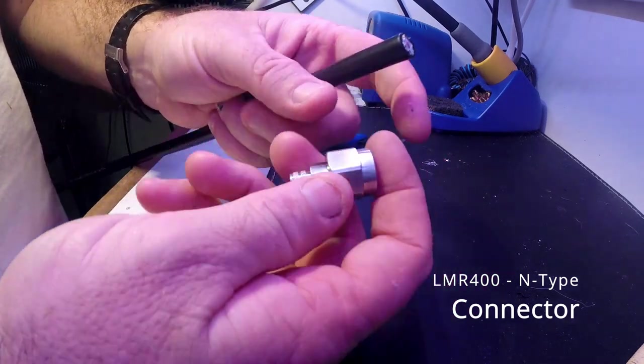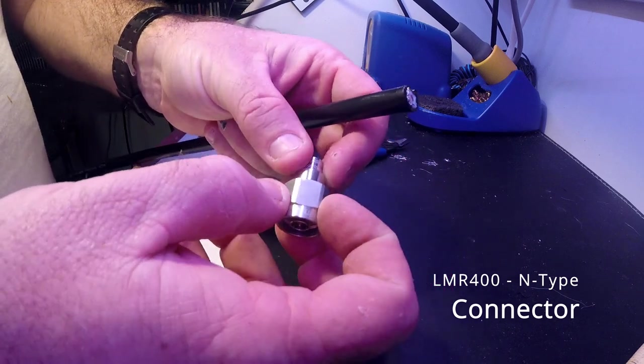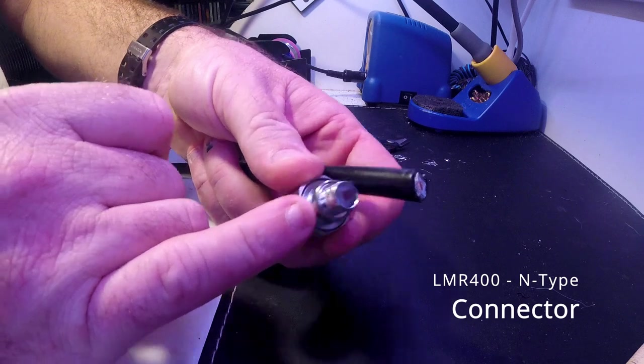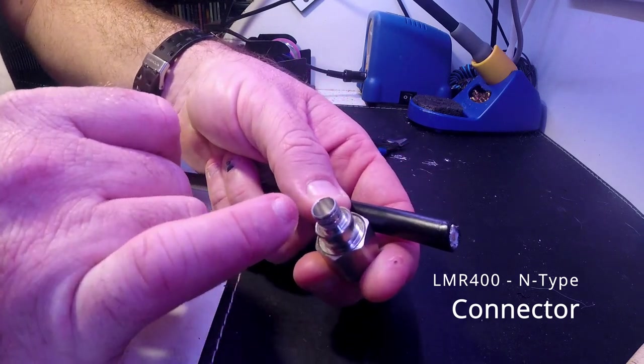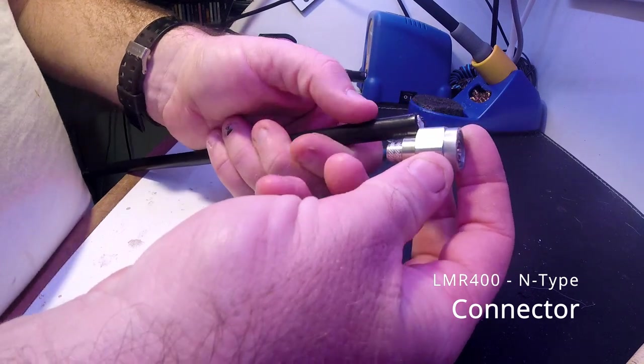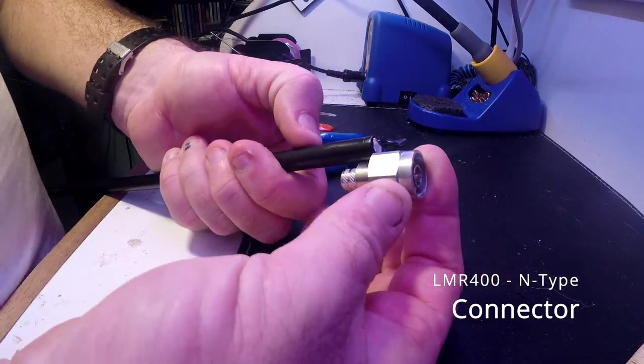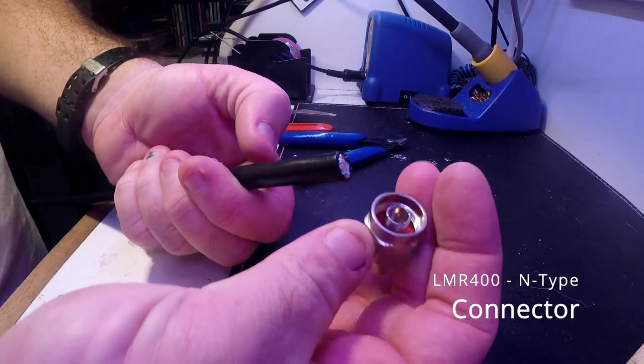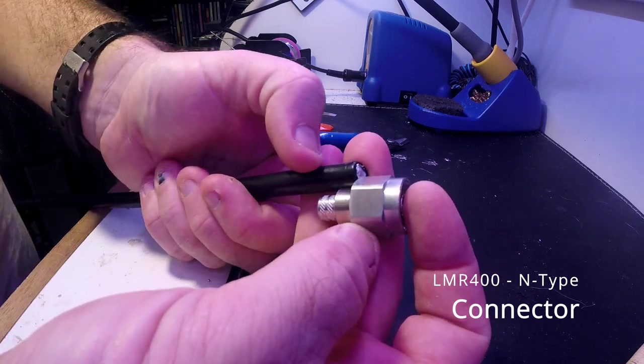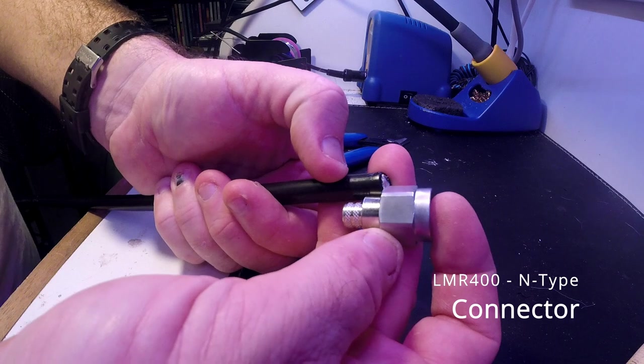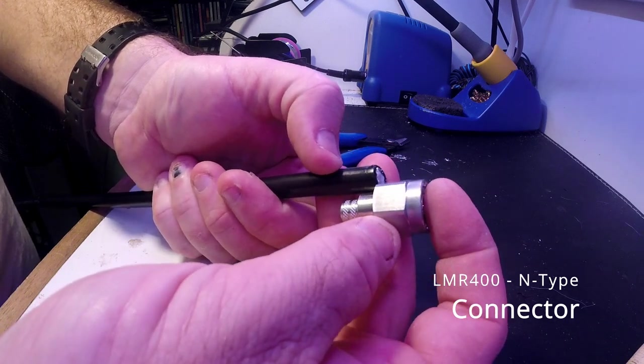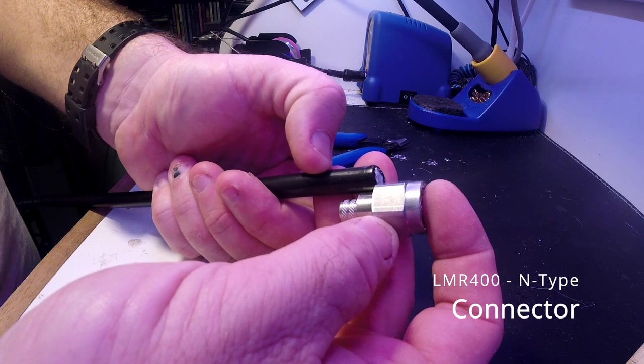And what we need to get here is enough of the center conductor to go up inside the plug and then seat in the pin. I normally measure it. Very similar to a PL259. I just get the connector, measure it to there. I know I need to cut about there but I need an additional length for the center pin so I cut about another 5mm off that.